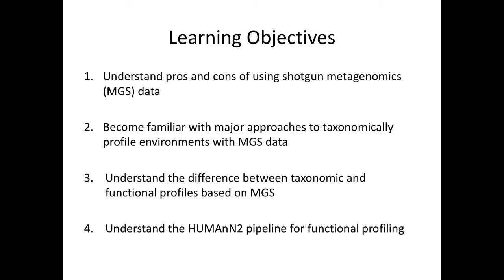The main learning objectives for this lecture are to introduce the pros and cons of using shotgun metagenomics data in general, and to become familiar with the major approaches to taxonomically profile the community — meaning who's there. We'll also understand the difference between functional and taxonomic data types, and I'll focus in more detail on the HUMAnN2 pipeline, as well as a few other examples.